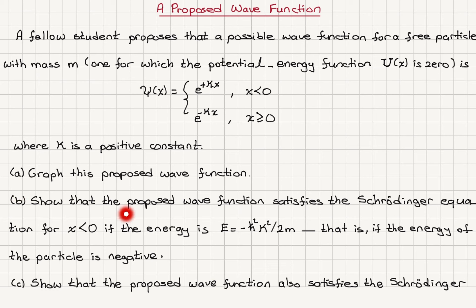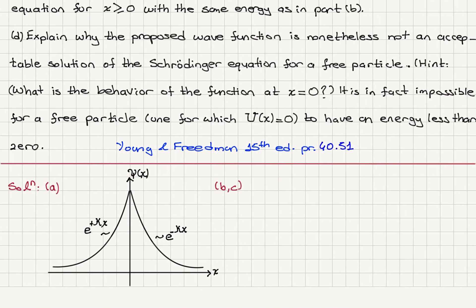Part B: show that the proposed wave function satisfies the Schrödinger equation for x negative if the energy is minus h-bar squared kappa squared over 2m — that is, if the energy of the particle is negative. Part C: show that the proposed wave function also satisfies the Schrödinger equation for x greater than or equal to zero with the same energy as in Part B. Part D: explain why the proposed wave function is nonetheless not an acceptable solution of the Schrödinger equation for a free particle. Hint: what is the behavior of the function at x equals zero?